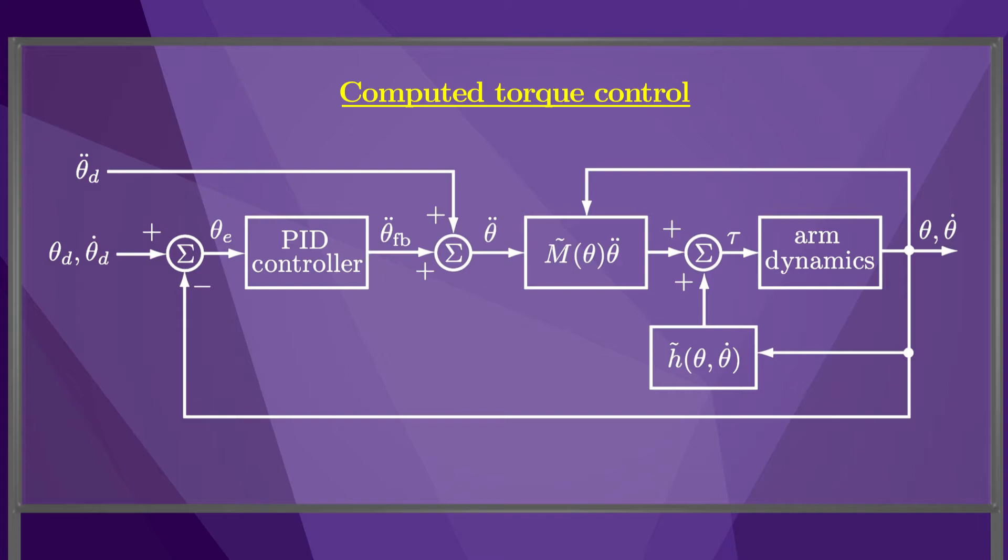If the dynamic model is poor, then using it in the controller could actually hurt performance compared to a model-free feedback controller. Also, evaluating the mass matrix and H vector could be computationally intensive for real-time control. For this reason, simpler versions of this control law are common.